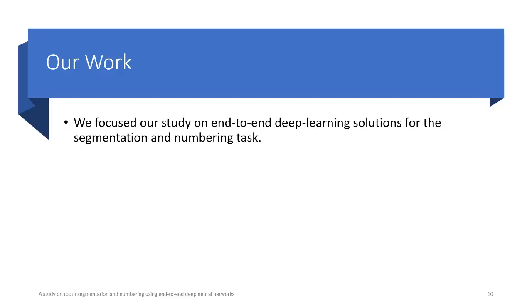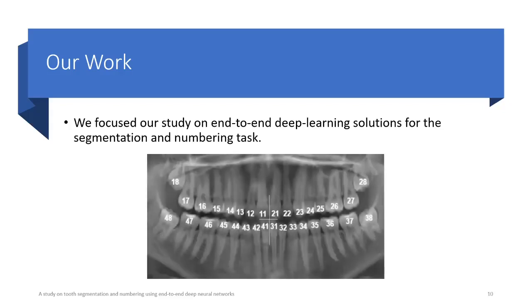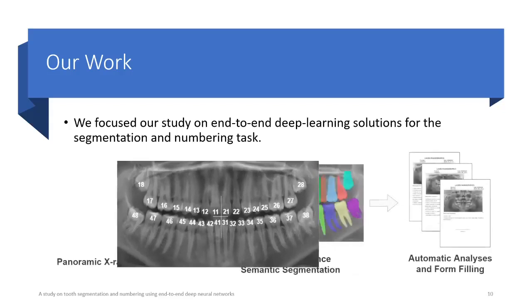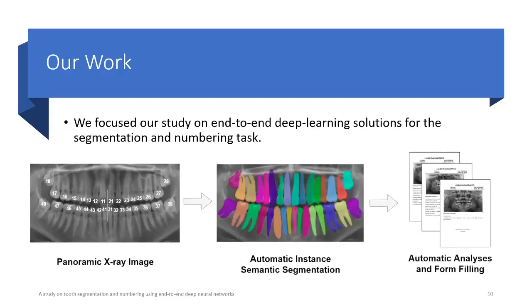Let me explain what tooth numbering is. Each tooth has a long name, which dentists don't use too much. They usually refer to teeth by a two-digit number in which the first digit specifies the quadrant and the second digit identifies the tooth type. So you can think of numbering as a tooth classification. Our work aims to segment and number each tooth instance in panoramic dental X-rays to perform automatic analysis and form filling.